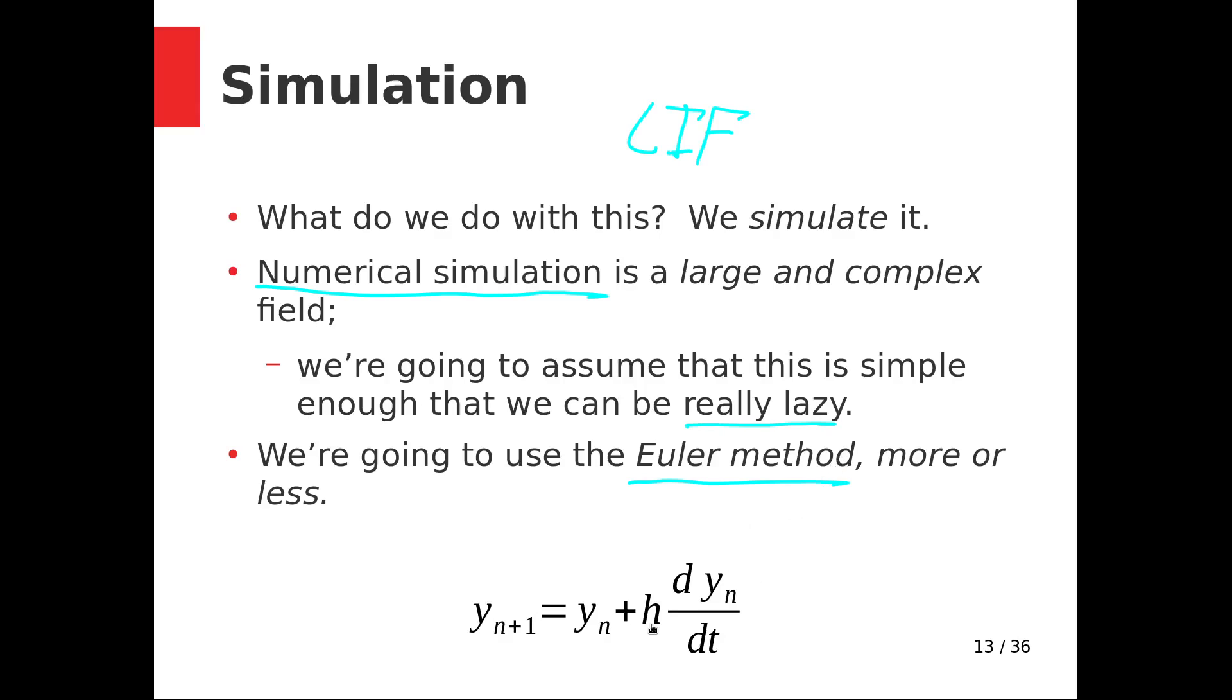The Euler method is basically: given a voltage at a time, we update that voltage with some little time step times that state equation. That's basically it.